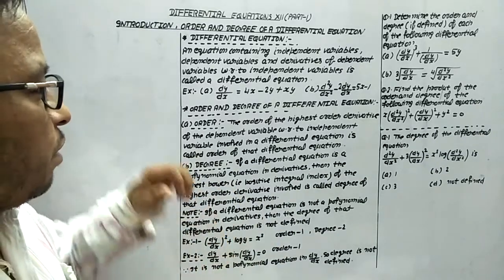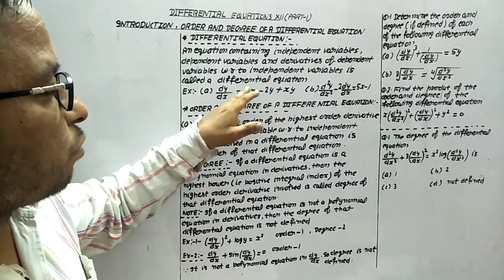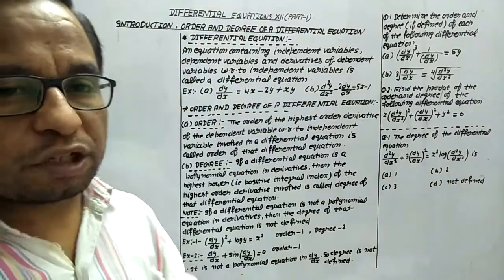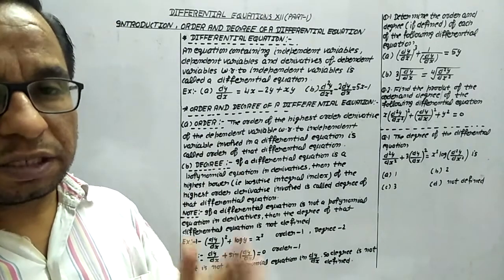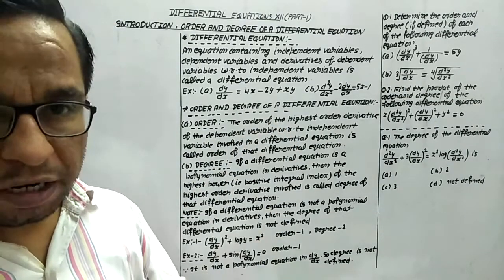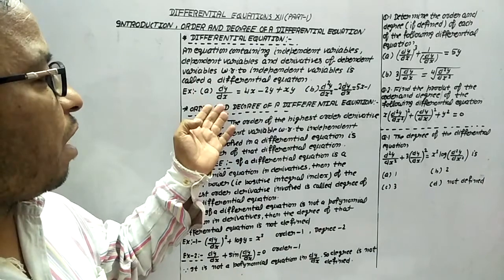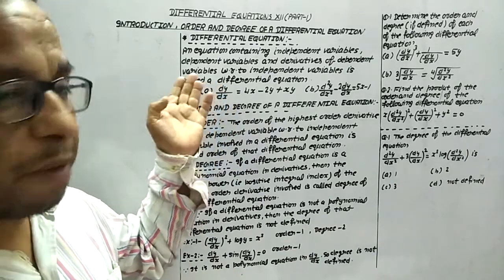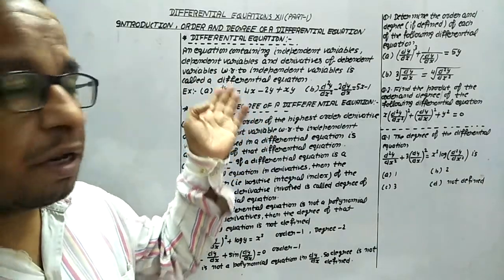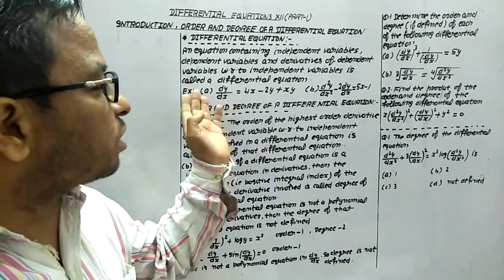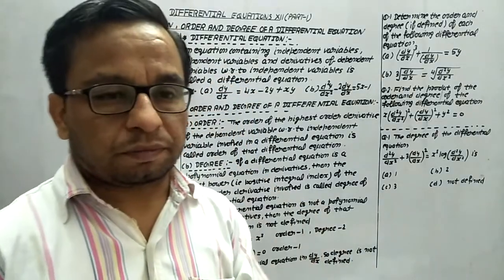For example, we have dy/dx = 4x − 2y + xy. Here, x is the independent variable, y is the dependent variable, and we have the derivative of the dependent variable with respect to the independent variable. That's why this equation is a differential equation.